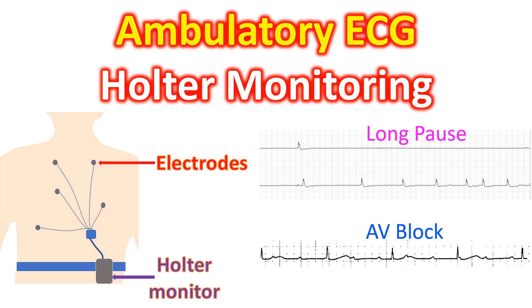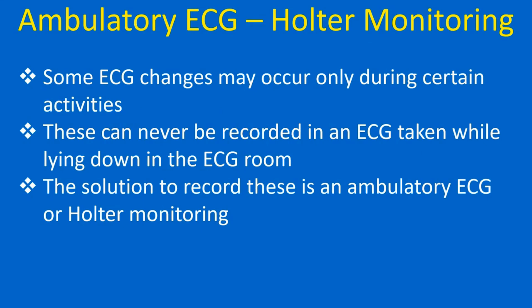Ambulatory ECG or Holter monitoring. A usual ECG is recorded over a short period of time, typically within 1 minute. Certain abnormalities which can be detected by ECG may not occur during this short recording period. Heart rhythm disorders which are intermittent may not be recorded on the clinic ECG. Some ECG changes may occur only during certain activities and can never be recorded while lying down in the ECG room. The solution to record these is an ambulatory ECG or Holter monitoring.